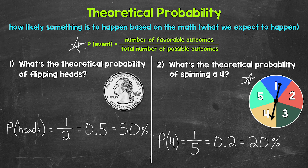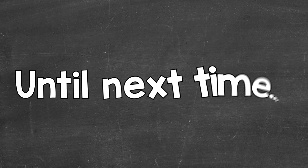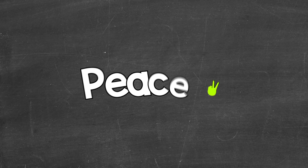So there you have it — that's what theoretical probability is. Theoretical probability tells us how likely something is to happen based on the math; it's what we expect to happen. I hope that helped. Thanks so much for watching. Until next time, peace.